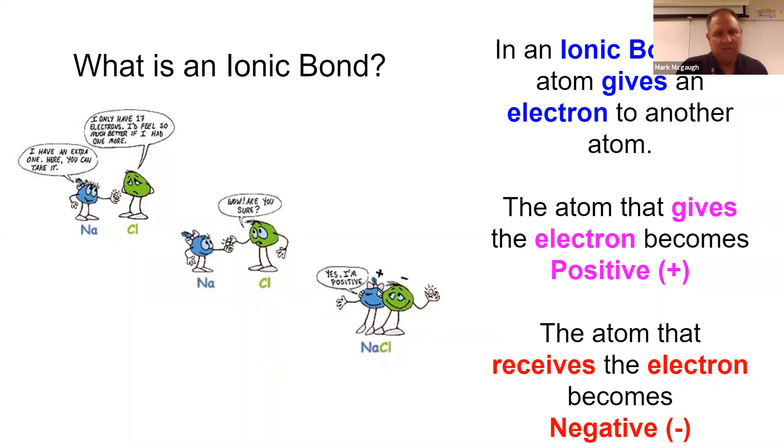Because now they have opposite charges, they're attracted to each other. But the electron originally started out with the sodium. In the end, it's with the chlorine.